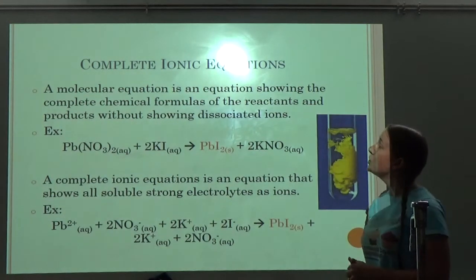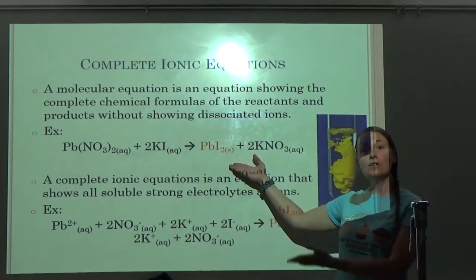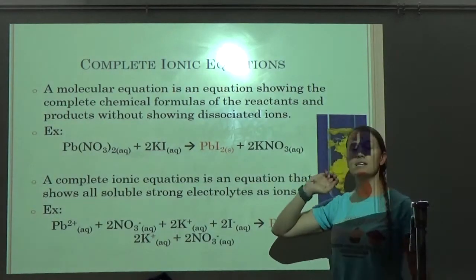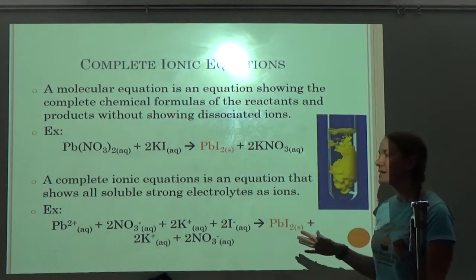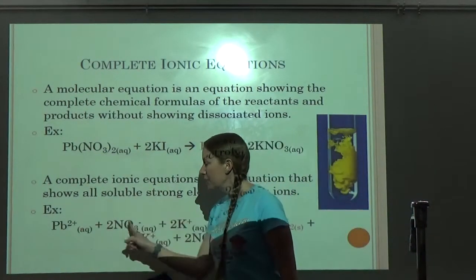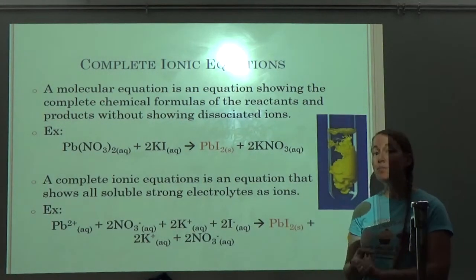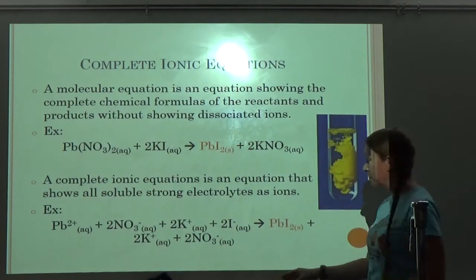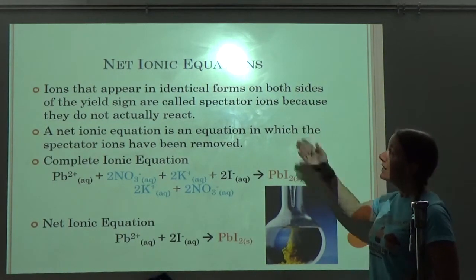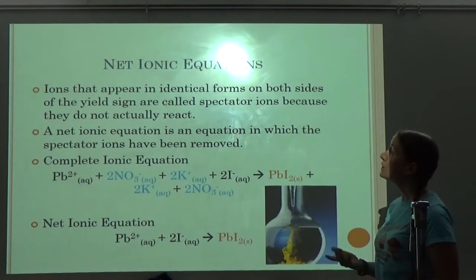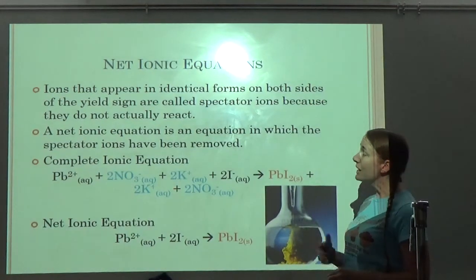A molecular equation shows the complete chemical formulas of the reactants and products without showing dissociated ions. A complete ionic equation shows all soluble strong electrolytes as ions — anything aqueous can be split up and written as individual ions, while anything solid, liquid, gas, or weak acid/base is written in molecular form. We focus more on net ionic equations. Ions that appear in identical forms on both sides of the yield sign are called spectator ions because they do not actually react — they're just floating around in the beaker.